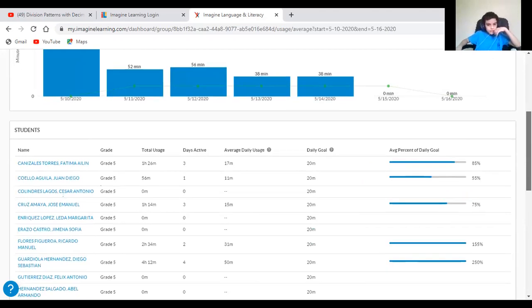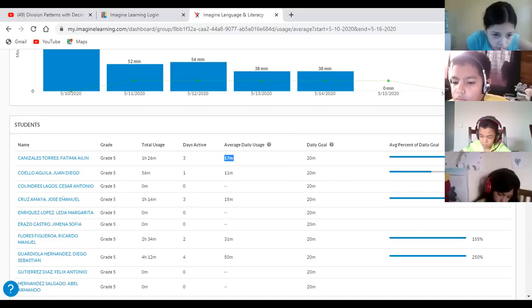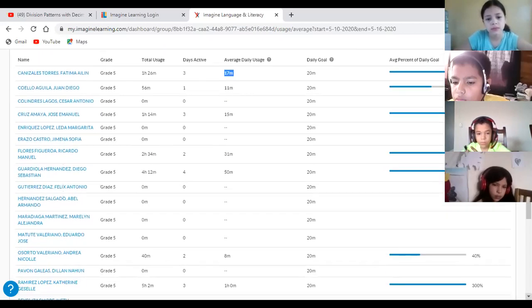This week, if you see, Fatima, daily use 17 minutes. You have to work in 20. Juan Diego Guardiola, 50 minutes, and only have to work 20 minutes. But Leda, no. Jimena, no. Cesar, no. O sea, los que no tienen minutos aquí es que no han entrado durante la semana. Miren qué montón. Felix no ha entrado. Abel no ha entrado. Marilyn no ha entrado. Eduardo Matute no ha entrado. Dylan no ha entrado.